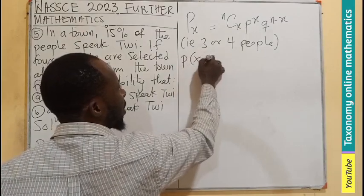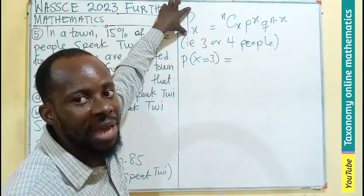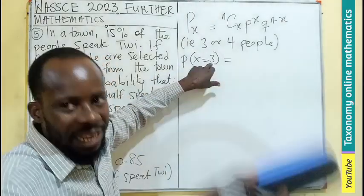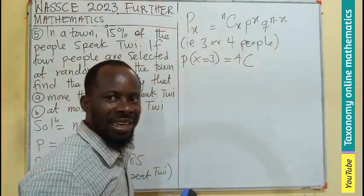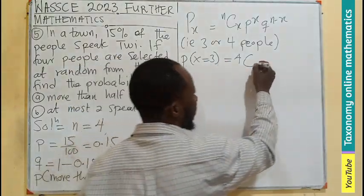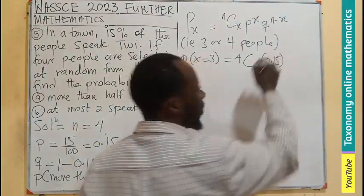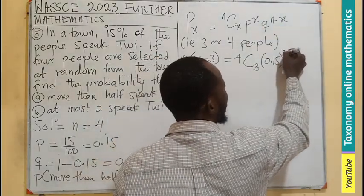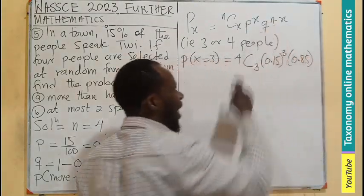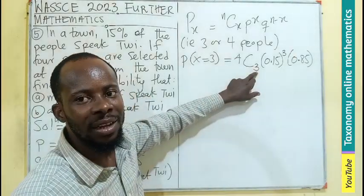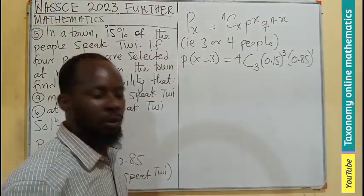Let's take P(X=3). That is: 4C3 times 0.15 to the power of 3, times 0.85 to the power of (4−3), which is 1. We compute 4C3 first. Using the formula n!/(r!(n−r)!), that gives 4!/( 3! × 1!) which equals 4.